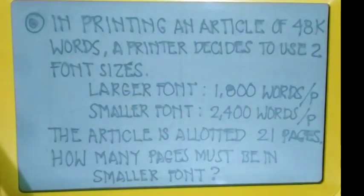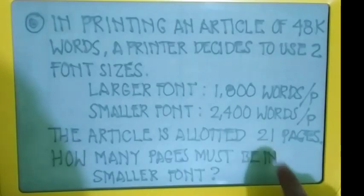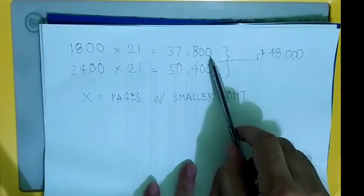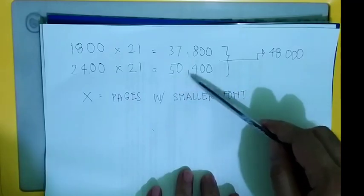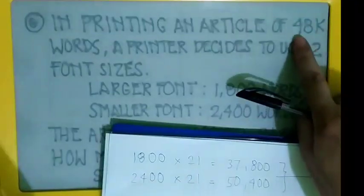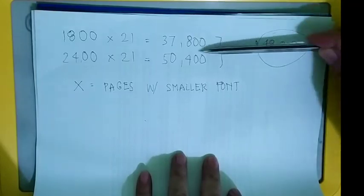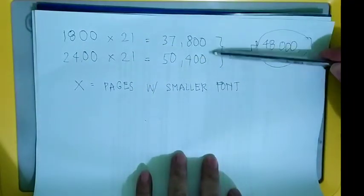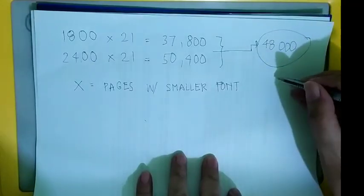Let us take a look. If we use only the larger font: 1,800 words per page times 21 pages equals 37,800. If we use only the smaller font: 2,400 per page times 21 pages equals 50,400 words. The requirement is 48,000 words, which falls in between. So there must be a proper mixture so that we can have exactly 21 pages.